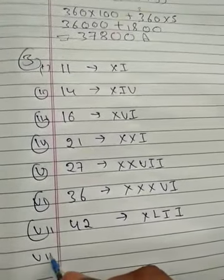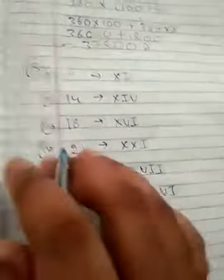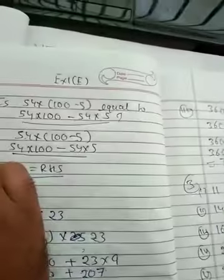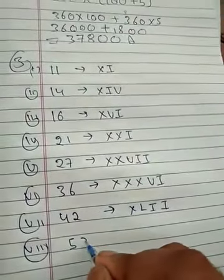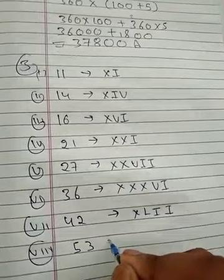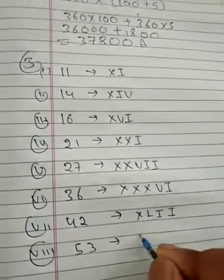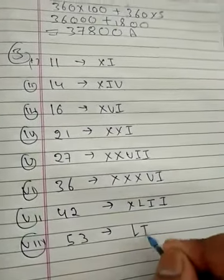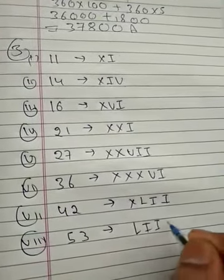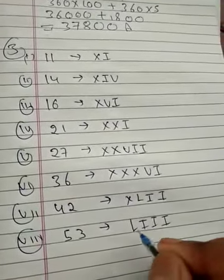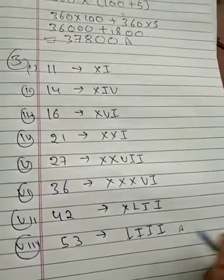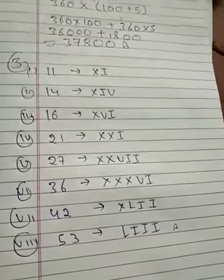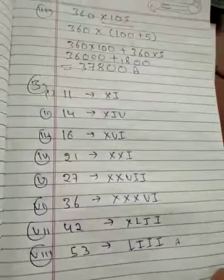Eighth part: 53 can be written as LIII — L represents 50 and III represents 3, so 50 + 3 = 53. This is the answer. Rest of the parts you can do as homework.